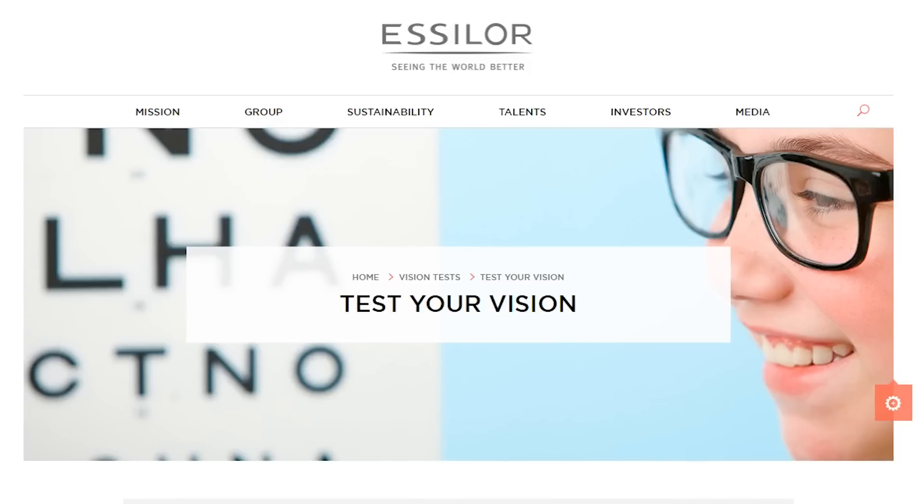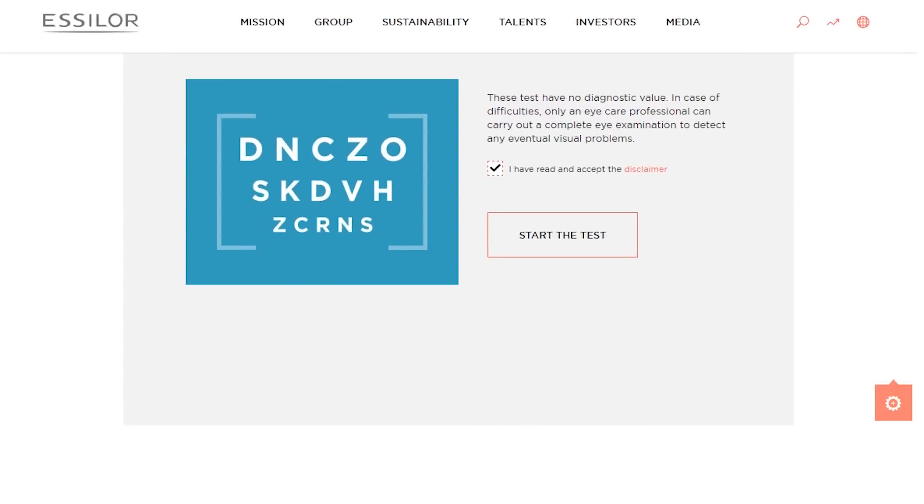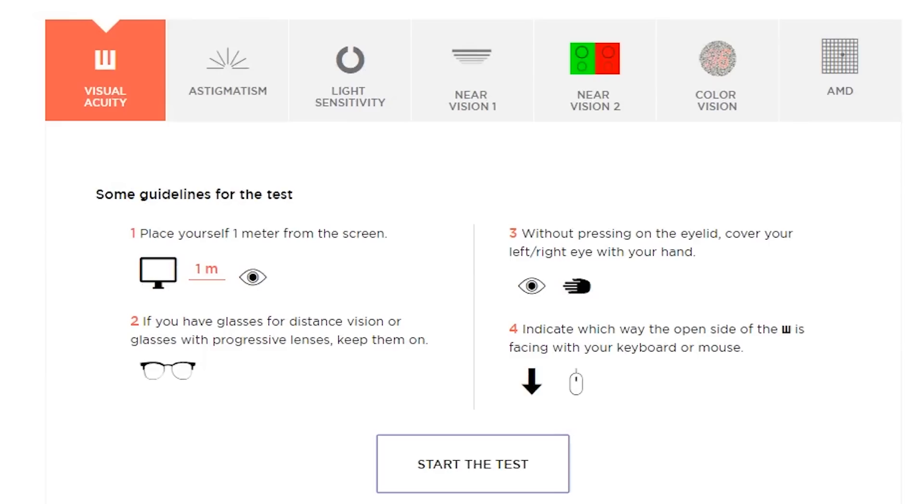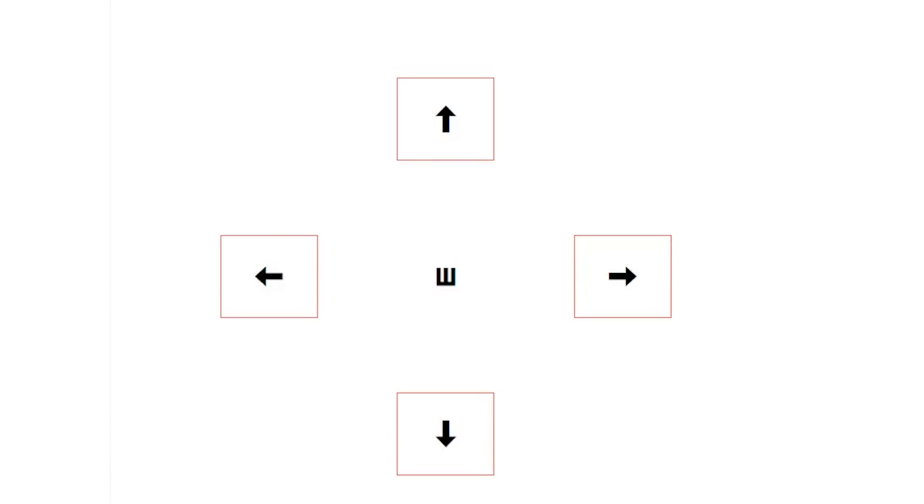No? Well, maybe you need your vision checked on Essilor.com, which has no diagnostic value, but it's fun, so please join me. Cover one of your eyes and use your arrow keys to indicate which way the open side of the W is facing.